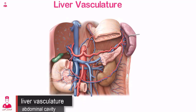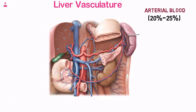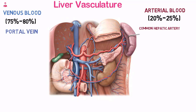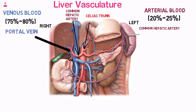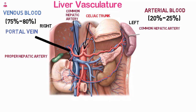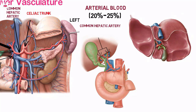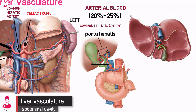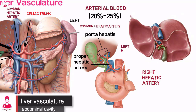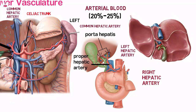The liver has a dual blood supply, receiving arterial blood (20–25%) from the common hepatic artery and nutrient-rich venous blood (75–80%) from the portal vein. The common hepatic artery usually arises as one of three branches off the celiac trunk, coursing to the right to enter the lesser omentum anterior to the portal vein. It branches into the proper hepatic and gastroduodenal arteries just above the duodenum, while within or just before entering the porta hepatis. The proper hepatic artery divides into right and left hepatic arteries, which supply the lobes of the liver, with the right hepatic artery being larger and supplying the majority of the right lobe.